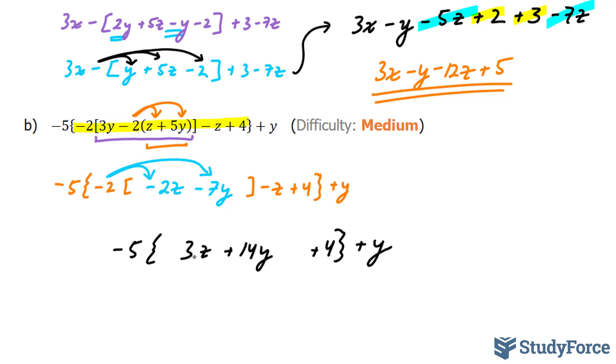These three terms are not like terms, so we need to liberate them by multiplying this negative 5 into the bracket. This is known as the distributive law.